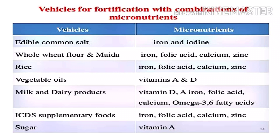Milk and dairy products can be fortified with vitamin D, iron, folic acid, calcium, and omega-3 and omega-6 fatty acids. Sugar can be fortified with vitamin A. These are common vehicles used in ICDS supplementary food programs.